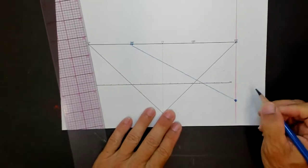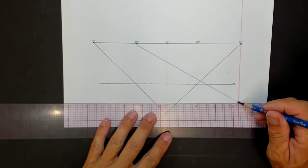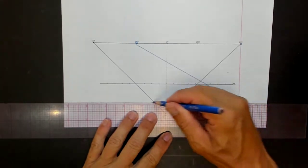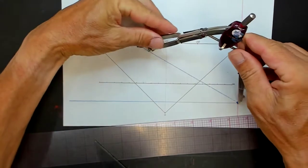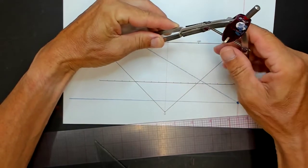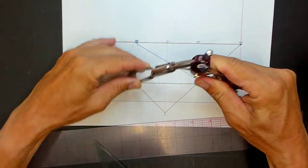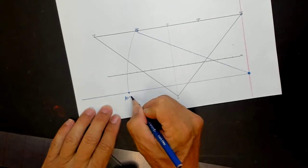So here is our auxiliary vanishing point. And then straight across from that is our auxiliary horizon line. And then we take this distance, and here's our auxiliary measuring point.